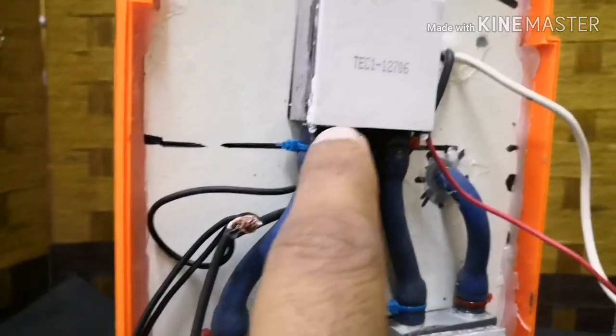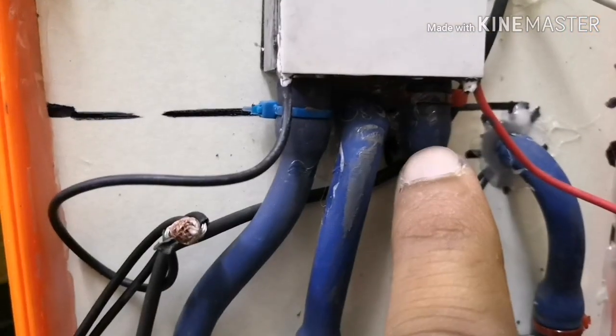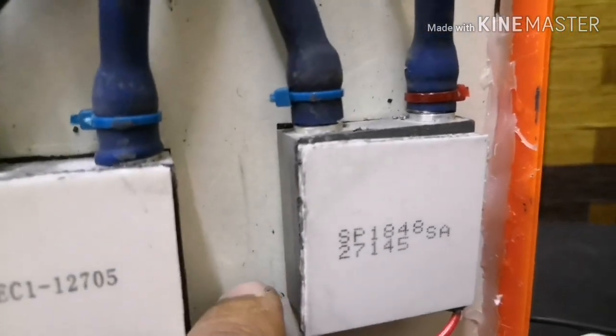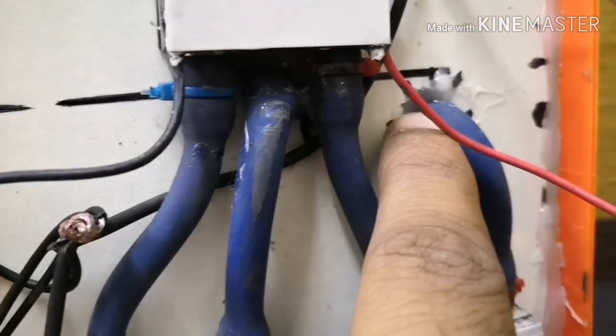This is the cooling side. From the TEC 12706 it comes back out and goes to the third cooling block, and from there it returns back to the radiator, which is this side.